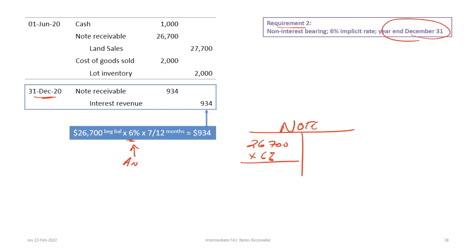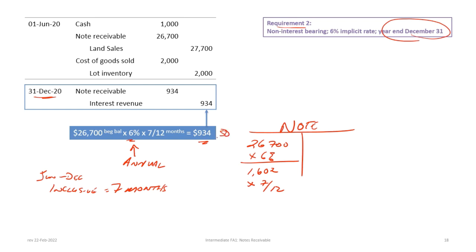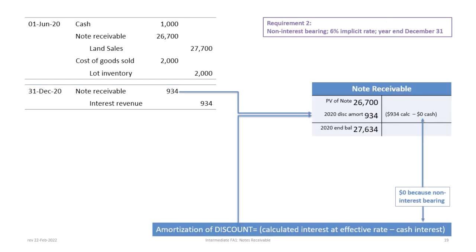The journal entry to record this is a debit to notes receivable of $934 and interest revenue of $934. Because there is no cash portion, this interest accrual is applied against the discount. There is a discount between the value of the note — $30,000 minus $26,700, which is a $3,300 discount — and over time that discount has to be fully amortized against the note receivable account so that at the end of the two-year period the balance in the note is $30,000. Starting at $26,700, adding $934 discount amortization gives an ending balance of $27,634.